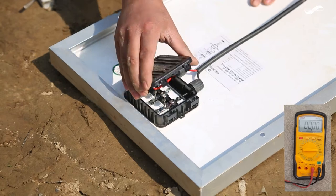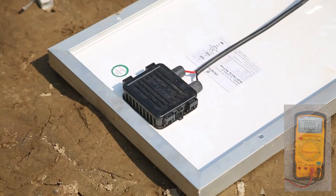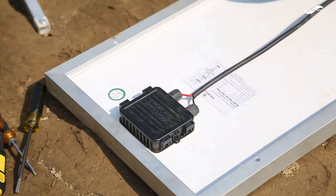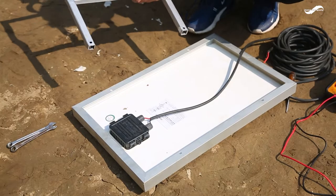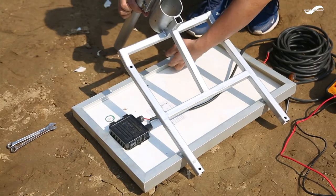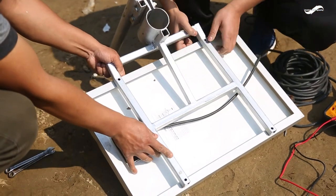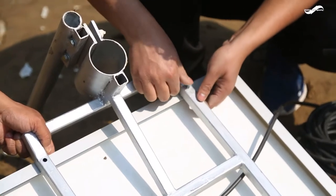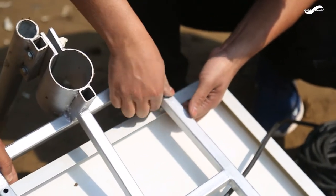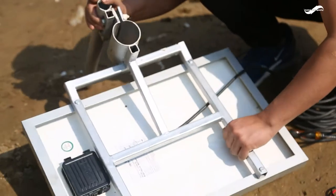After the cables are connected, set the solar panel to the mounting structure and fix it with the screws. Now fix the solar panel to this structure to mount. Secure it properly with the nuts and bolts.